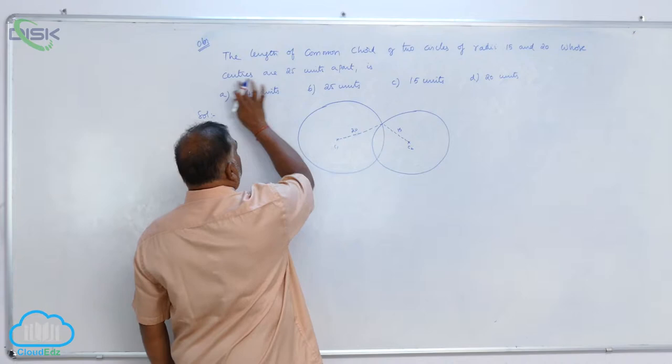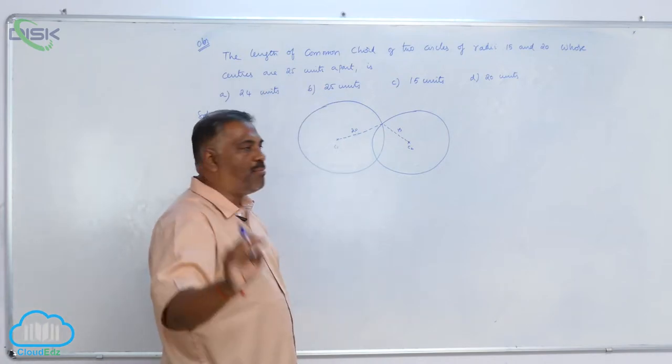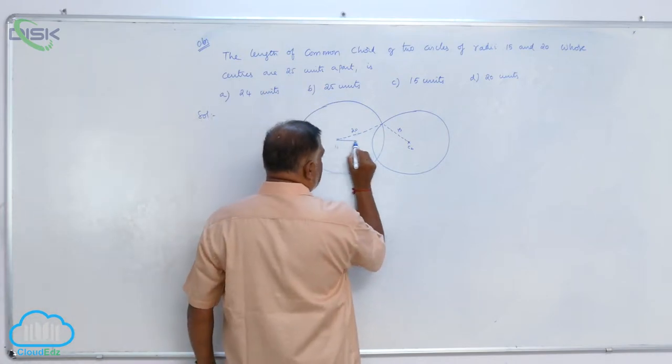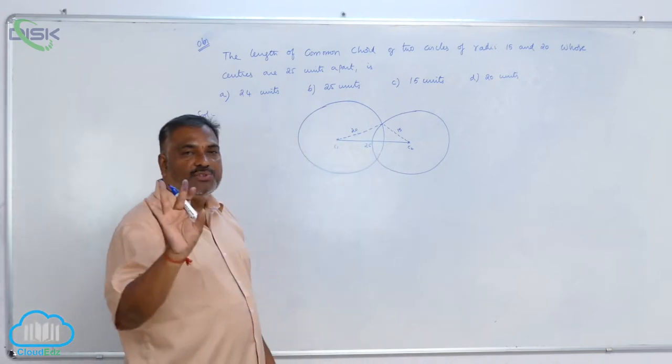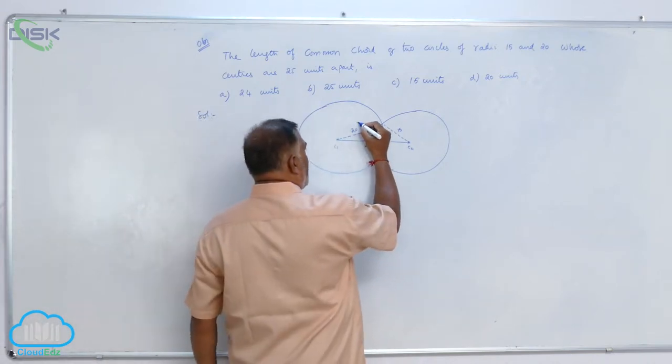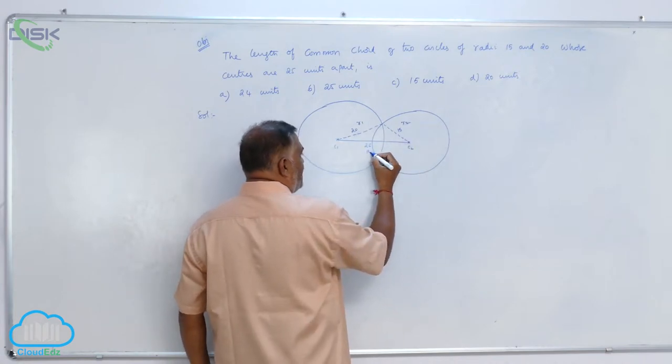He says that centers are 25 units apart. That means the distance between them is 25 units. You observe one logic. This is R1, this is R2, this is D.